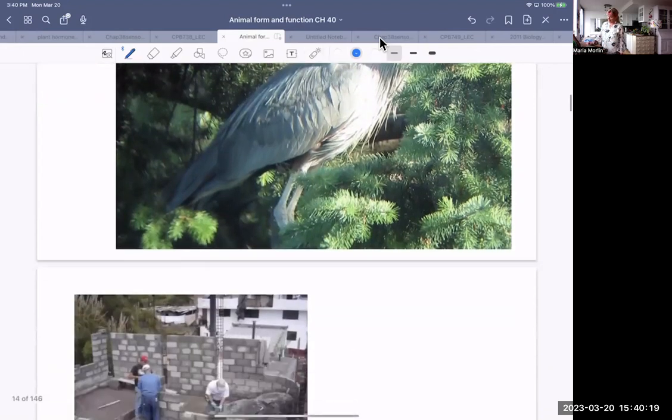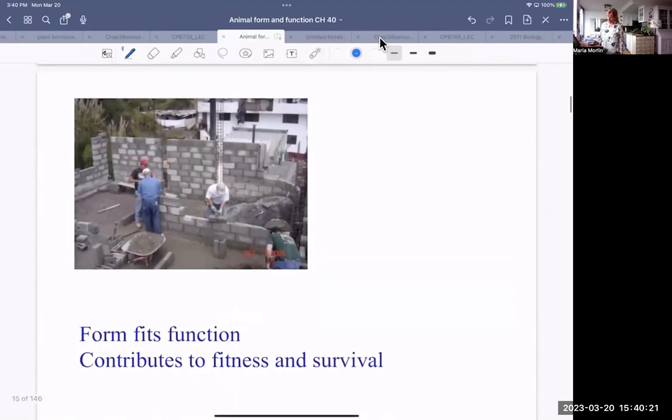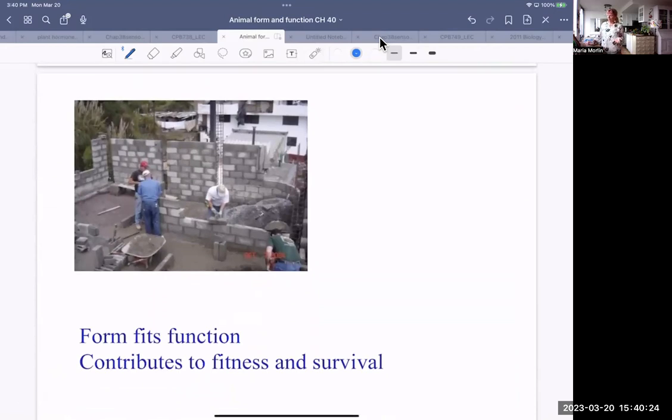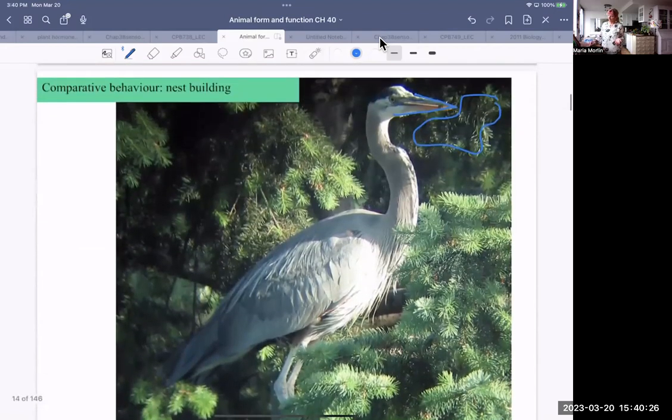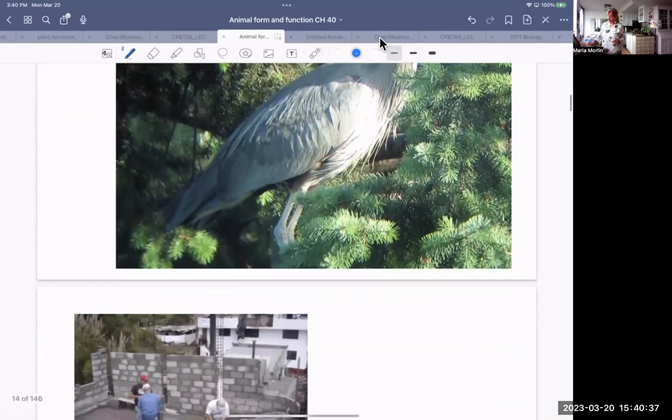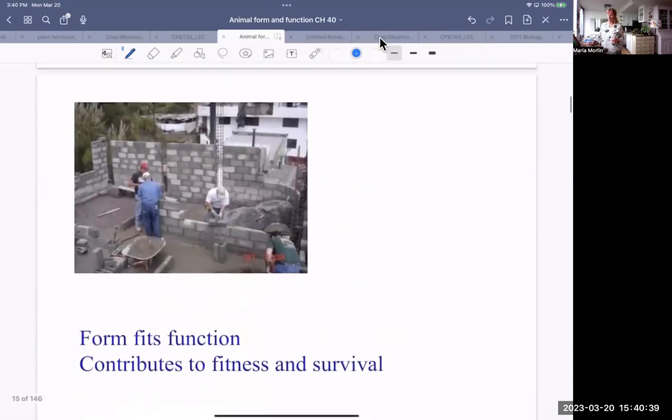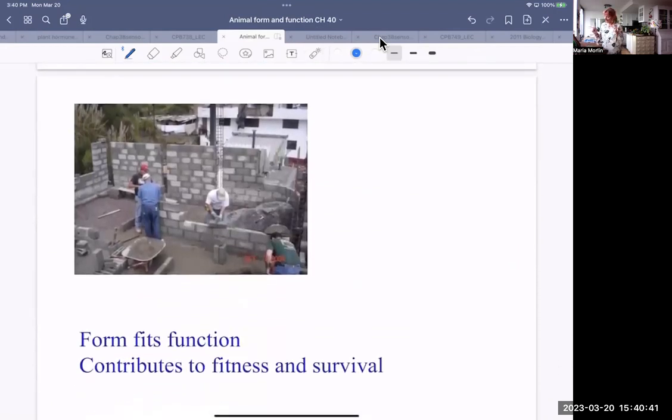Do humans nest? Sure they do. They build houses. So the male has to be able to carry the twigs. Its form, in other words, the size of its bill, allows it to carry a twig back to the nest. Whereas humans, of course, they have opposable thumbs and they're able to carry tools. Form fits function, whether you're a heron or a human.